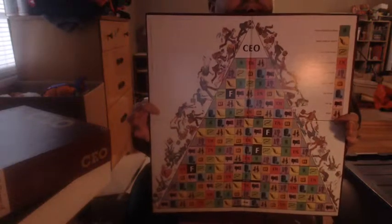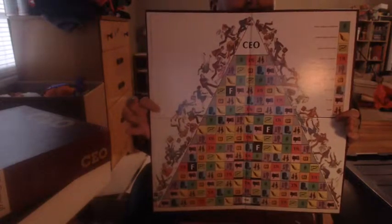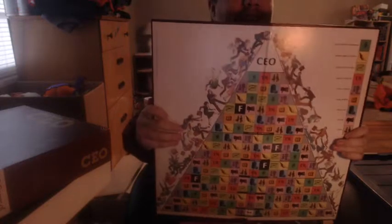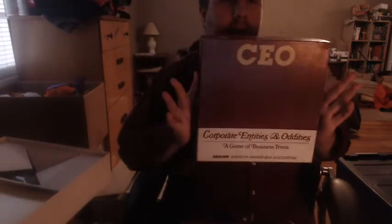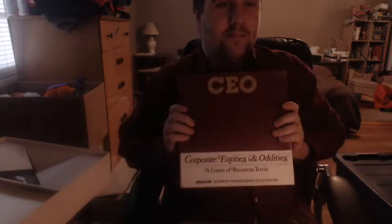Just like a food pyramid, there is also a business pyramid in Corporate Entities and Oddities by Amacom. The game came out in 1984, and it is a game about business trivia.